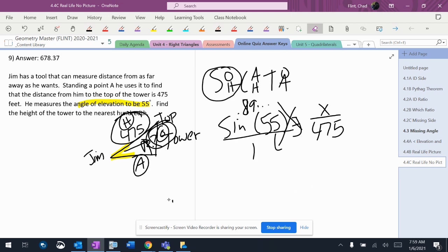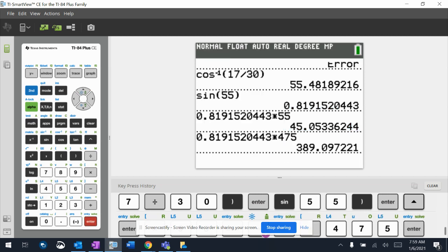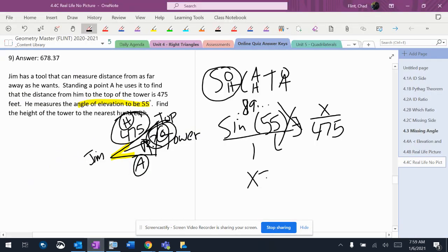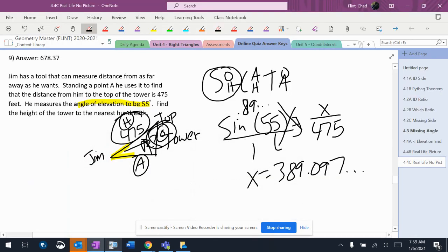It's that decimal times 475. So 389.097. It says nearest hundredth, that means I'm going to round the zero using the nine, which is 389.10.